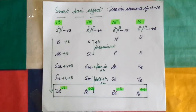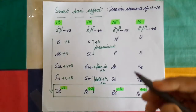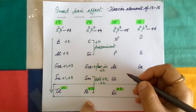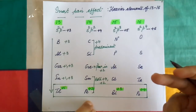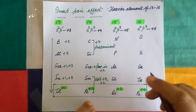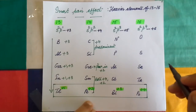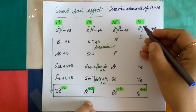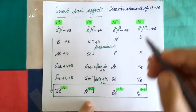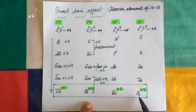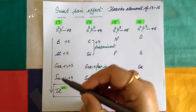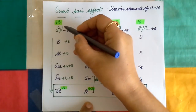Today I am going to discuss the inert pair effect. We know that in the periodic table, various elements are arranged according to their chemical properties in various groups. If we talk about groups 13 to 16, we find that in the case of heavier elements, groups 13 to 16 have an oxidation state two units less than the group oxidation state.